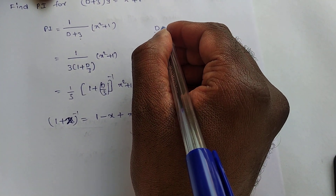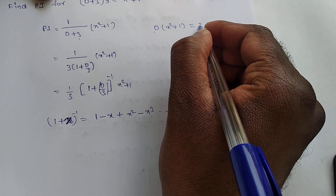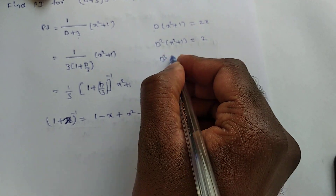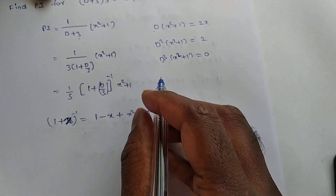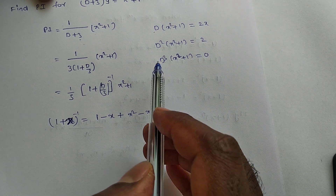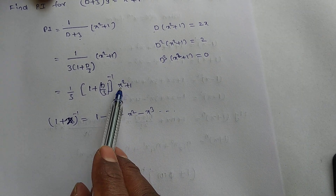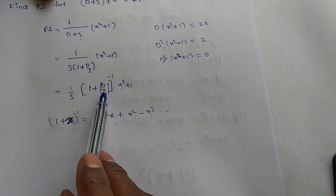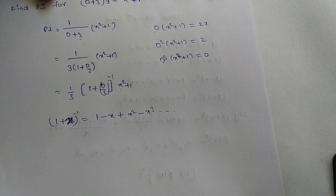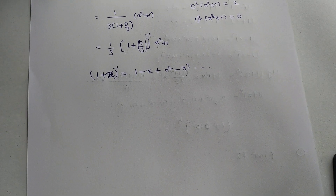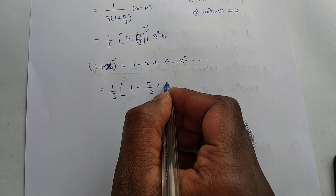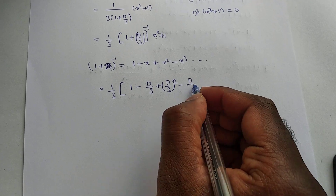Before expanding, compute the derivatives: D(x²+1) = 2x, D²(x²+1) = 2, D³(x²+1) = 0. Since the polynomial has degree 2, differentiating more than twice gives 0, so no need to write terms beyond D². Now expand: (1/3)·[1 - D/3 + (D/3)² - (D/3)³ + ...] · (x²+1), replacing x with D/3 in the binomial series.